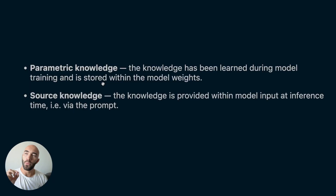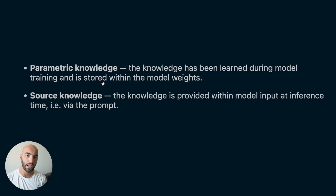With large language models, there are two primary sources of knowledge: parametric knowledge and source knowledge. Parametric knowledge is what the model learned during training and stored in its weights — for example, 'who is the first man on the moon?' the model knows Neil Armstrong from training. Source knowledge is where you feed knowledge into the model at inference time via the model input — i.e., via the prompt.